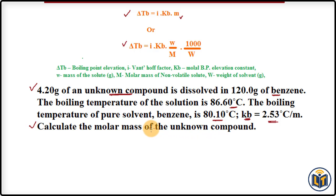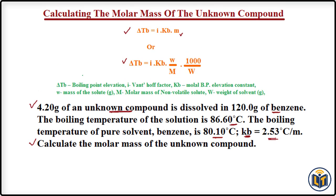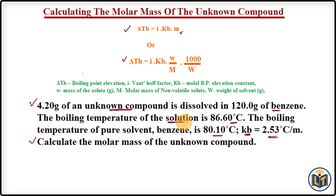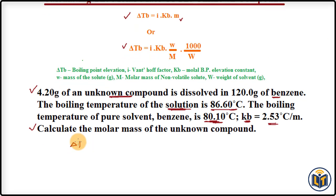Before calculating the molar mass, we need to find the boiling point elevation, Delta TB. Delta TB equals the boiling point of the solution minus the boiling point of the solvent, because when a non-volatile solute is added to a solvent, the boiling point always increases. So the boiling point of the solution is always greater than that of the solvent.